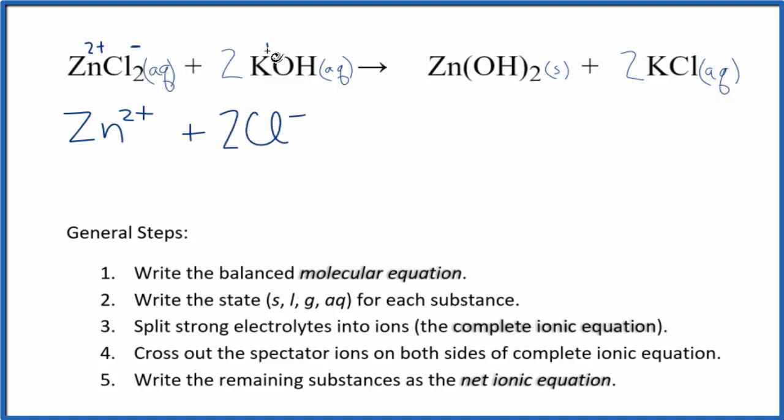Potassium is in group 1, 1 plus, and the hydroxide ion, always 1 minus. So I have the potassium ion, and the coefficient here means I have 2 of them. So 2K plus, this 2 applies to everything, so I also have 2 hydroxide ions.